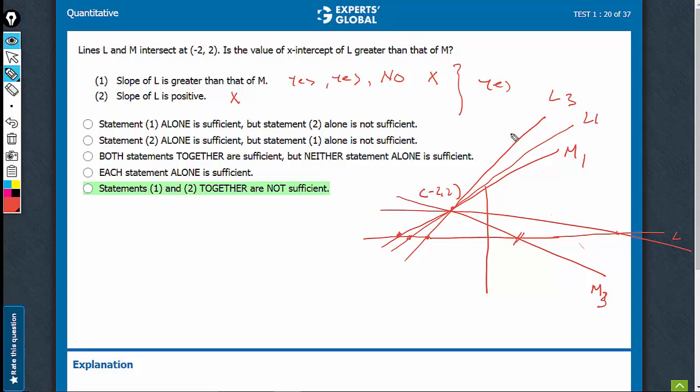This L3 versus M3 case is the important case. This will help you eliminate this option, also, and this will help you eliminate the option of combining, also. Even on combining, we are not sure. E is the right answer.